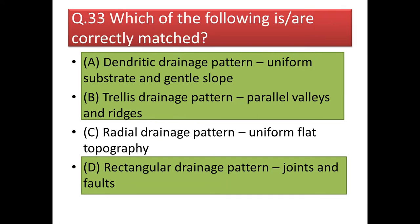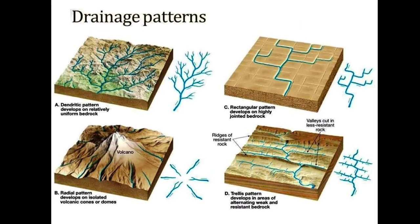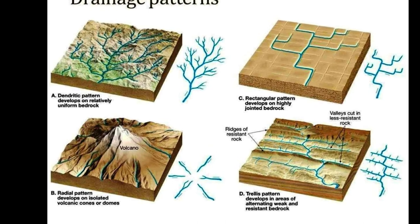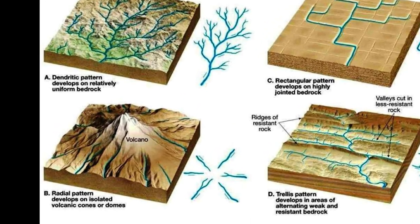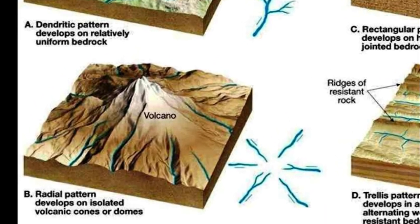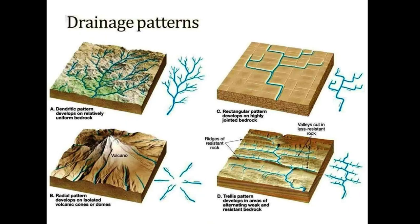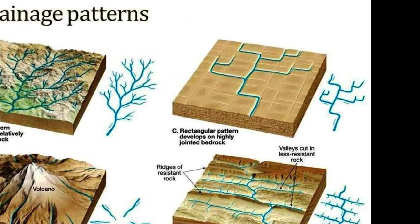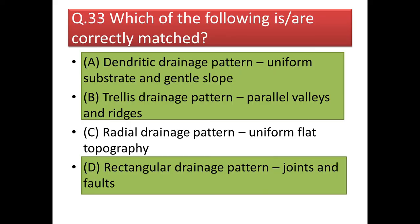Next question: which of the following statements are correctly matched? Dendritic drainage pattern is associated with uniform substrate and gentle slope — correct. Trellis drainage pattern is associated with parallel valleys and ridges — correct. Radial drainage pattern is uniform flat topography — wrong, because in radial drainage the streams radiate outward from a high central area, so it is not uniform flat topography. Rectangular drainage pattern forms in joints and faults — correct. Our answer will be option A, B, and D.